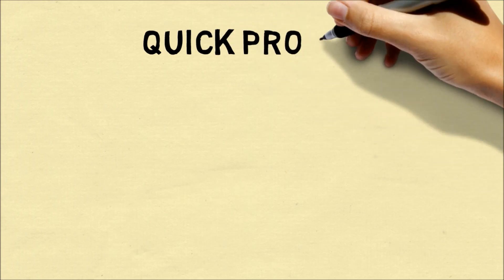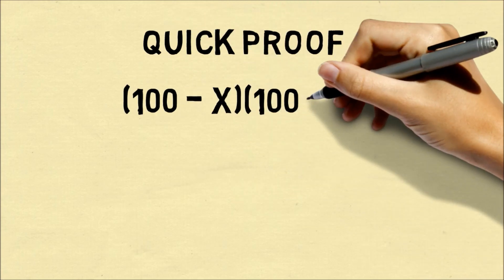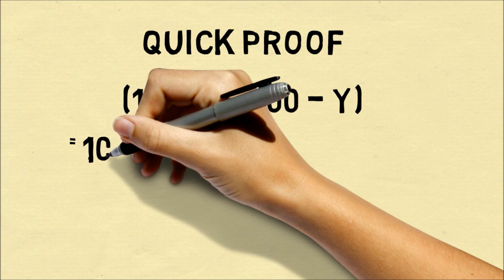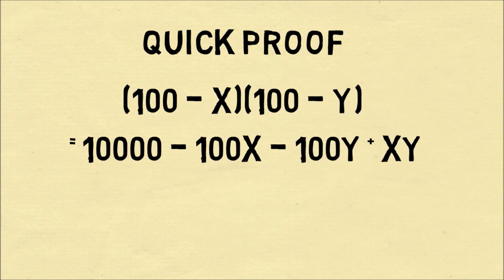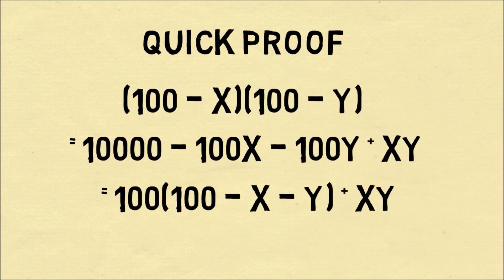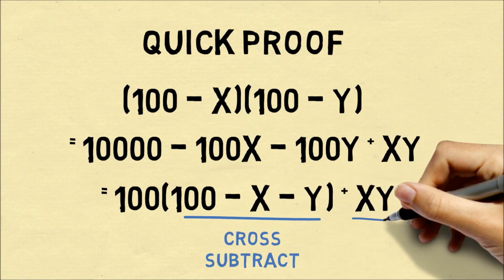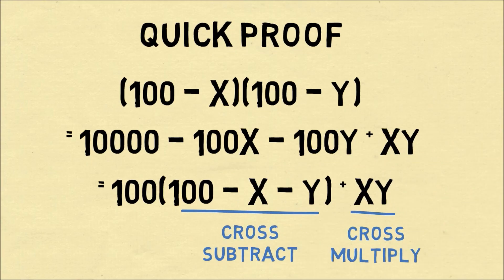Here's a quick proof of why this works. In general, our multiplication problems have been 100 minus x times 100 minus y. We can write it in this form. 100 minus x minus y is cross subtract. And the xy is the cross multiply.